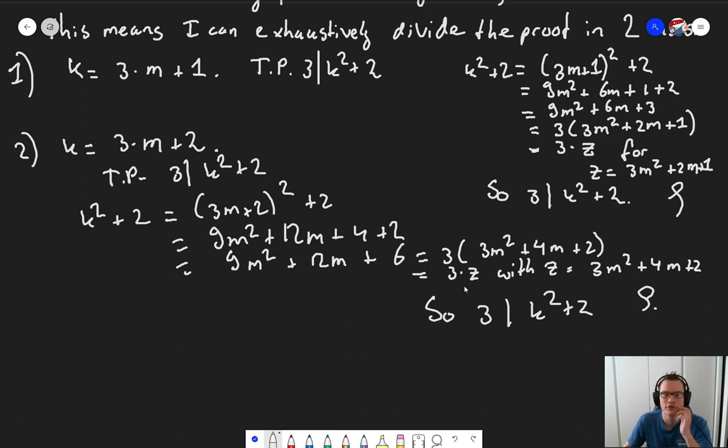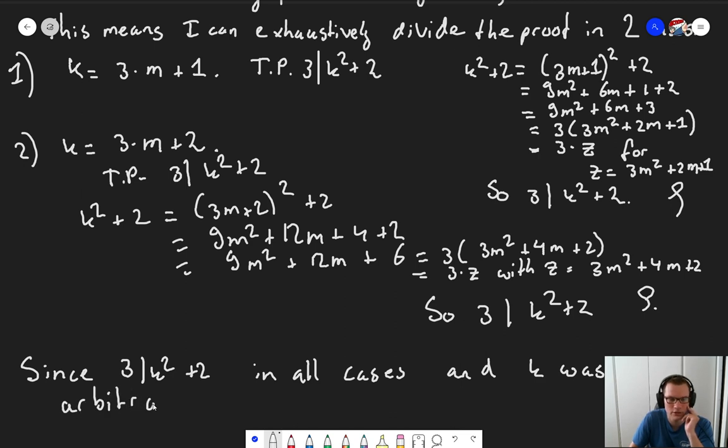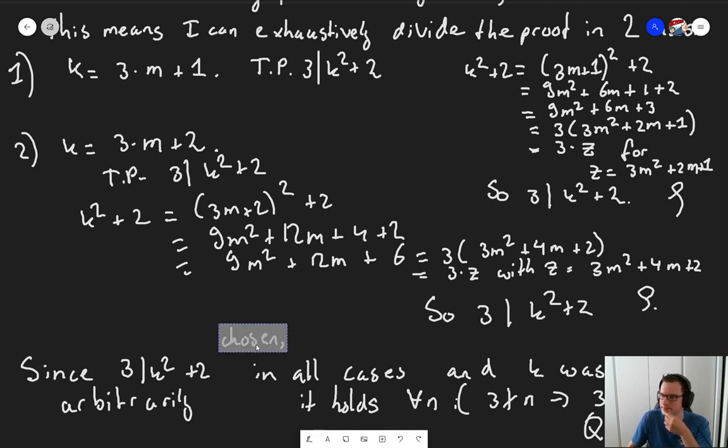Now all we need to do is wrap up the proof. Since 3 divides k squared plus 2 in all cases, and k was arbitrarily chosen, it holds for all n. If 3 does not divide n, then 3 divides n squared plus 2. Q.E.D.